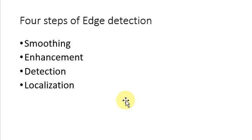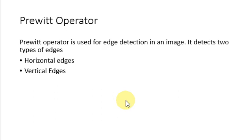The four basic steps of edge detection are: smoothing, enhancement, detection, and localization. In smoothing, we suppress as much noise as possible without destroying the true edges. In the second step, enhancement, we apply a filter to enhance the quality of the edges in an image, for example sharpening. In the third step, detection, we determine which edge pixels should be discarded as noise and which should be retained. Usually thresholding provides the criteria for detection. The last step, localization, determines the exact location of an edge. Edge thinning and linking are usually required in this step.